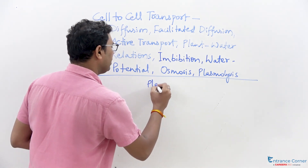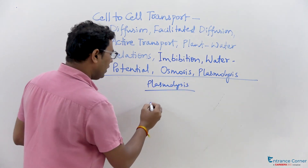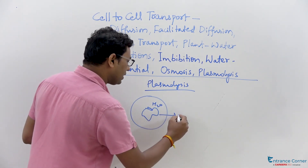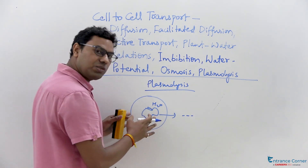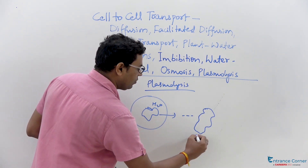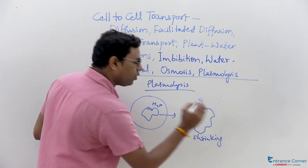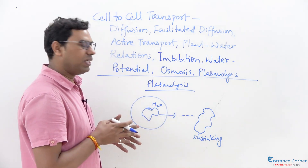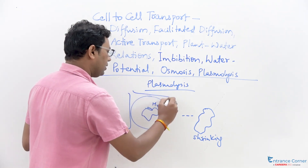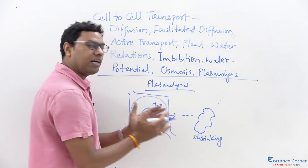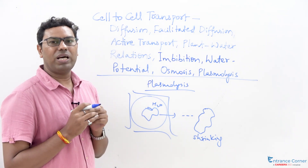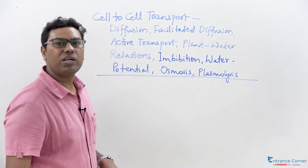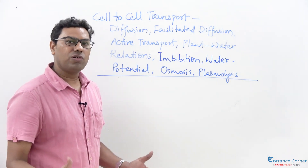Plasmolysis is a phenomenon in which a cell's water moves from the cell sap to another direction, causing the cell to shrink. This shrinking of the cell is called plasmolysis. In a plant cell, when water is transported from one cell to another area and the protoplasm shrinks completely, the cell shrinks — that activity is called plasmolysis. These phenomena are all very important for the transportation of water in the plant.